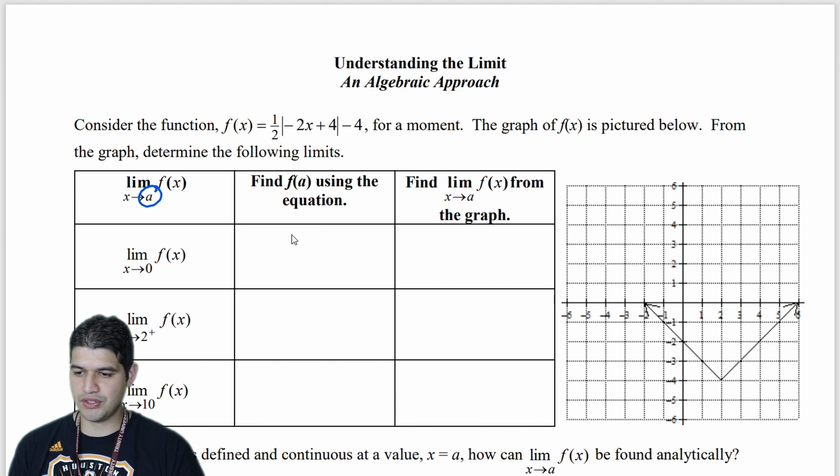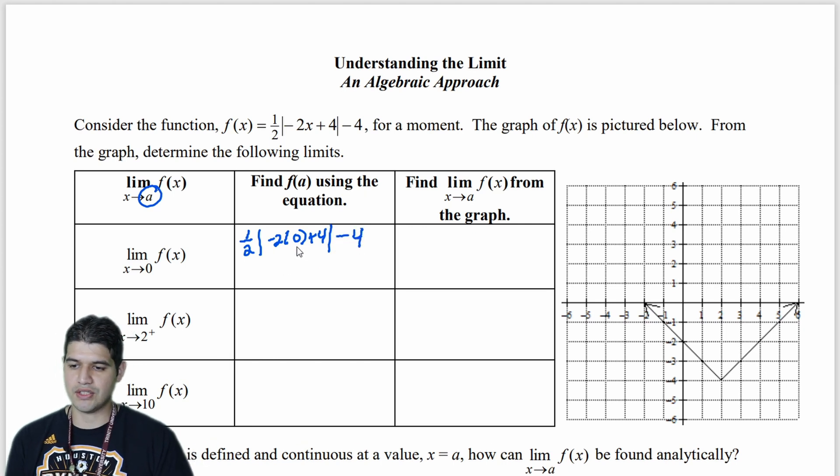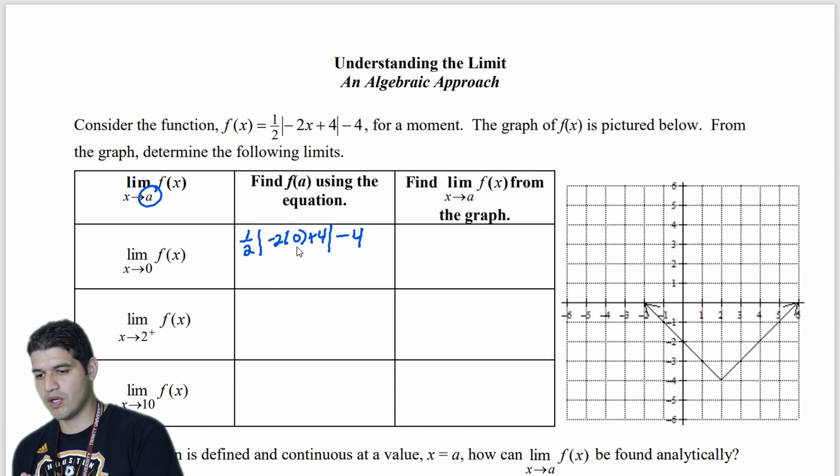So 1 half, negative 2. Sorry, I need to erase this. That's not a parenthesis. Negative 2 times 0 plus 4, absolute value, minus 4. So we're going to evaluate all that. So negative 2 times 0 is 0, plus 4, that's 4.